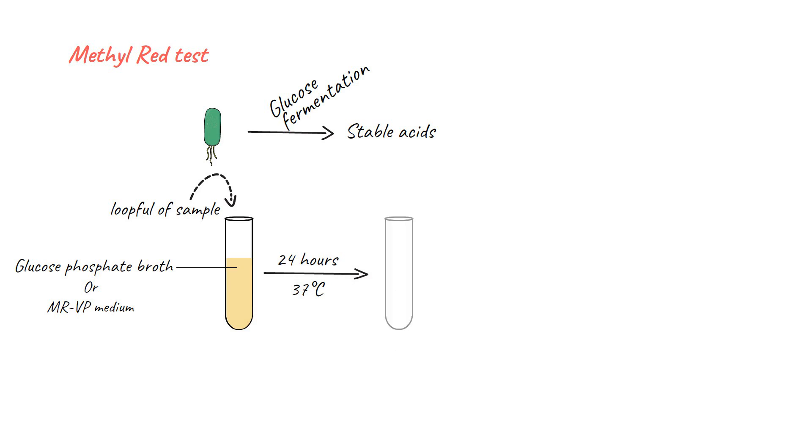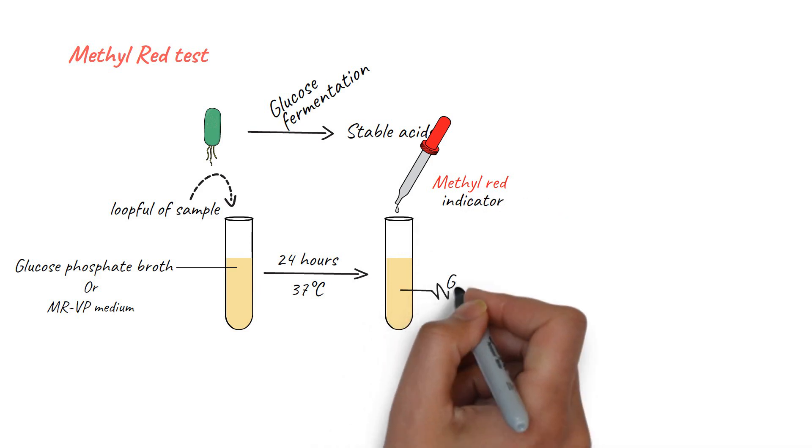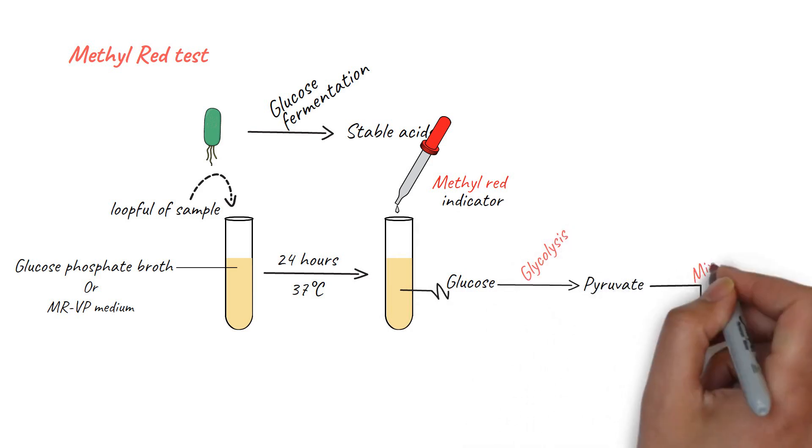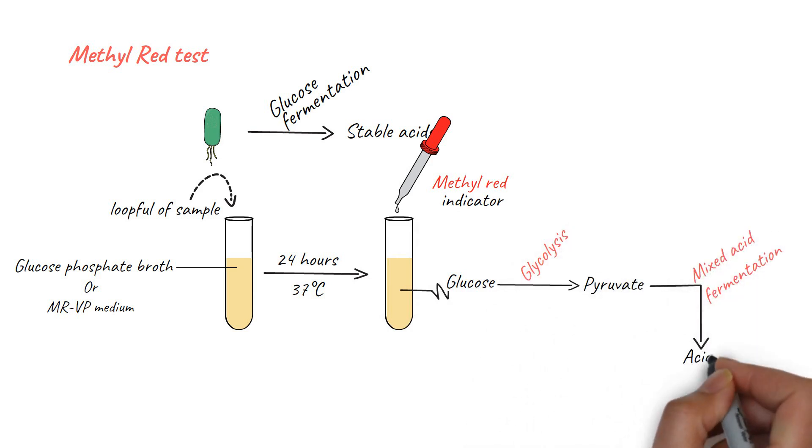After the incubation period, add a few drops of methyl red indicator. If the bacteria in our sample is able to produce and maintain large amounts of stable acids from glucose fermentation, the pH of the medium will be reduced. The reduction in the pH due to the acid production will be indicated by the methyl red indicator, which will turn the medium into a red color.